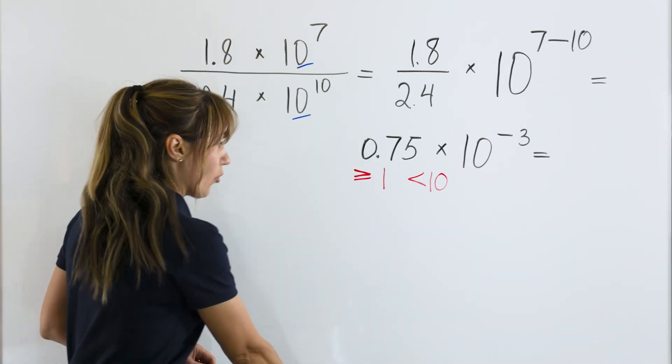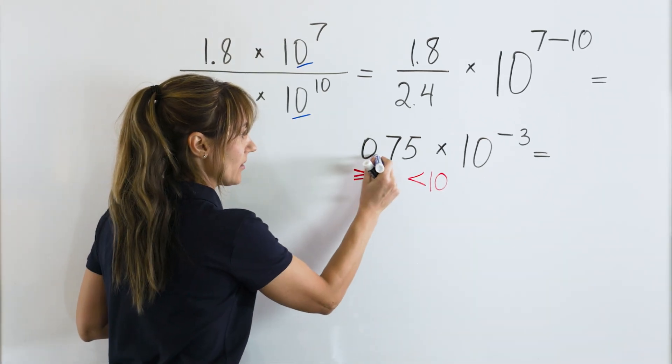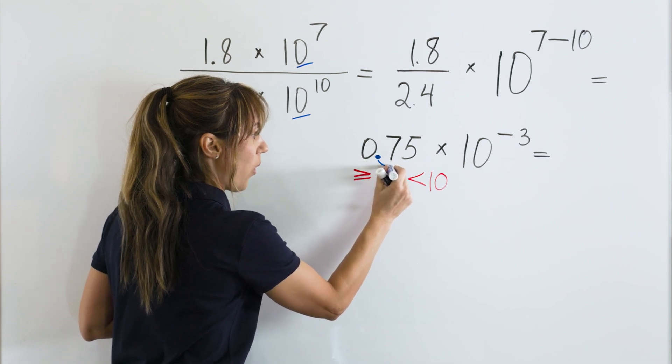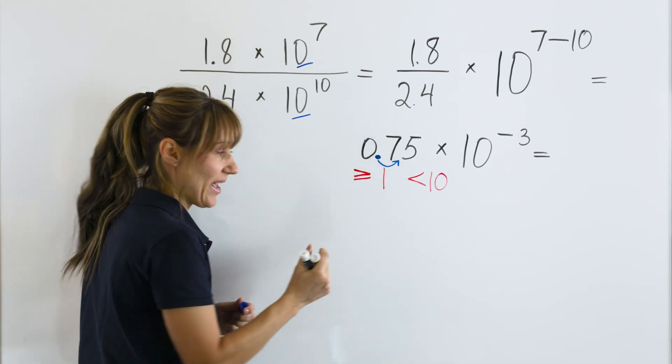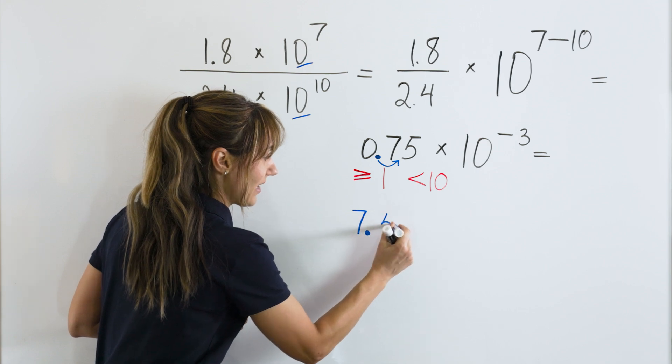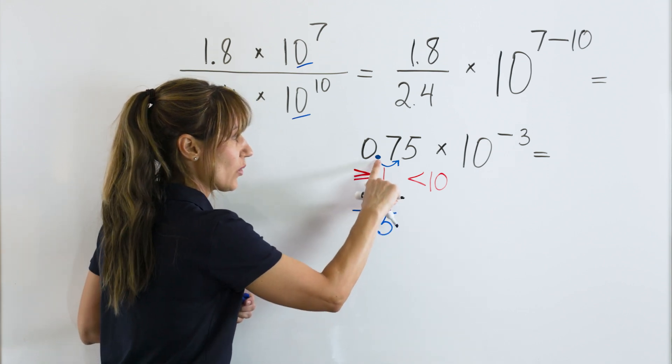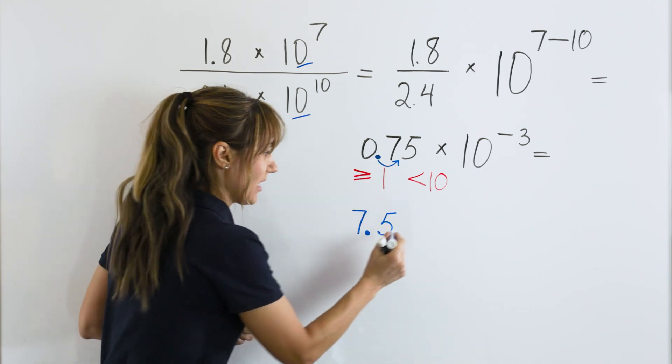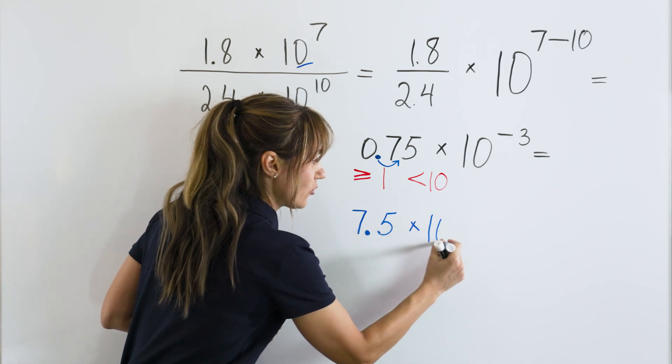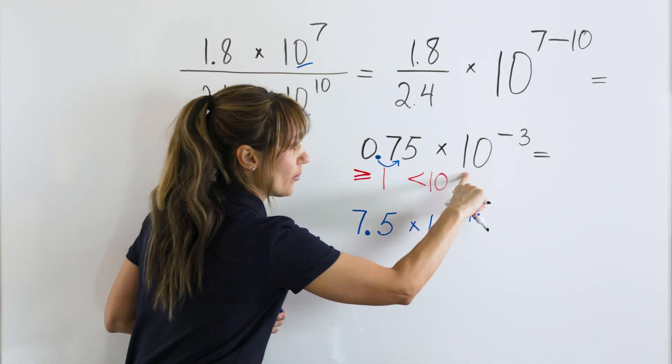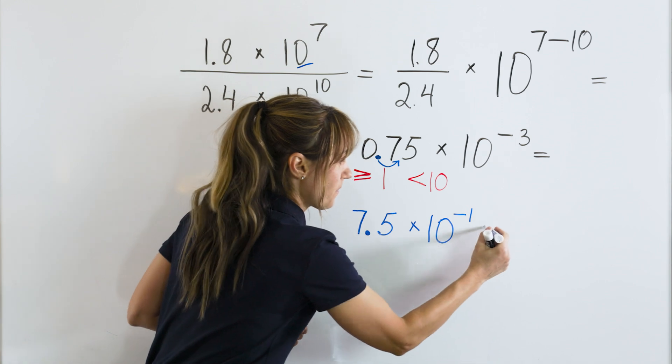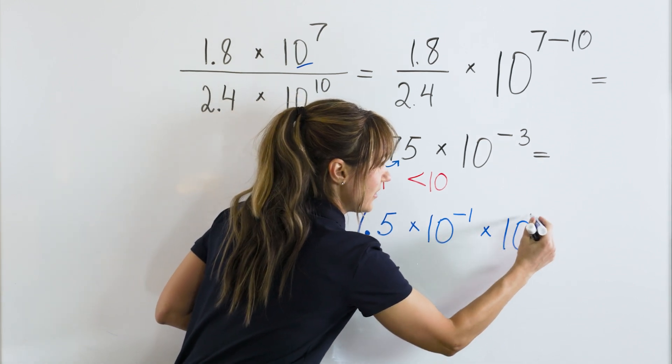To fix that, we will take this decimal point and move it one place to the right, and we will have 7.5. Since we moved one place to the right, we will multiply by 10 to the power of negative 1 and bring down what we had before, times 10 to the power of negative 3.